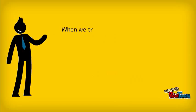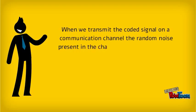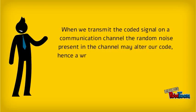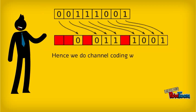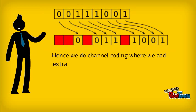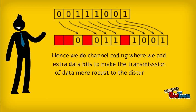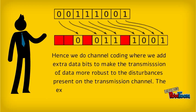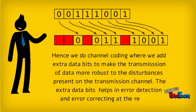When we transmit the coded signal on a communication channel, the random noise present in the channel may alter our code, and hence a wrong message could get delivered to the receiver. Therefore, we do channel coding, where we add extra bits to make the transmission of data more robust to the disturbance present on the transmission channel. These extra data bits help in error detection and error correction at the receiver.